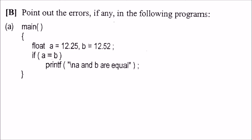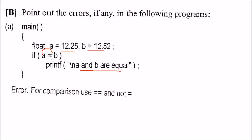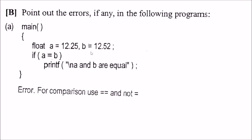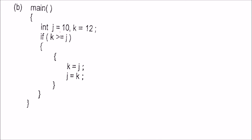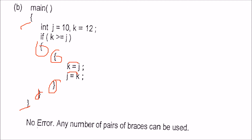Point out the errors in the following programs. a is 12.25, b is 12.52. If a equals b — this is using the assignment operator, not comparison. You should use double-equals. Next: j equals 10, k equals 12. If k is less than or greater than or equal to j, then k equals j — the braces are properly indented and formatted, so no error here.